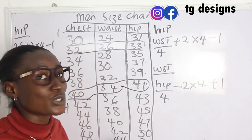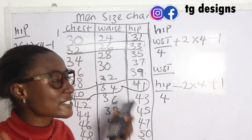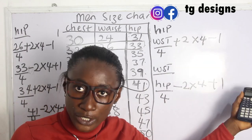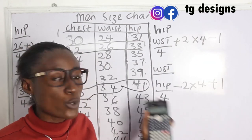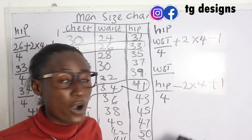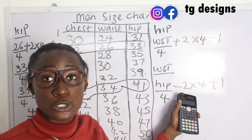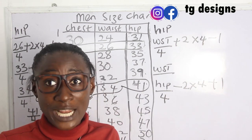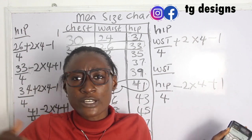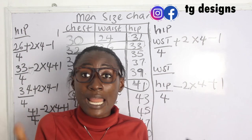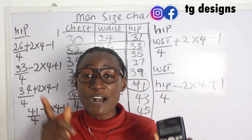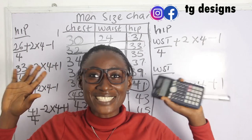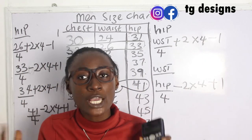So to summarize: to get your hip measurement, use waist ÷ 4 + 2 × 4 − 1. To get your waist measurement, use hip ÷ 4 − 2 × 4 + 1. Go ahead and pick measurements at random, calculate them, and let me know in the comments if you're getting the correct answers.